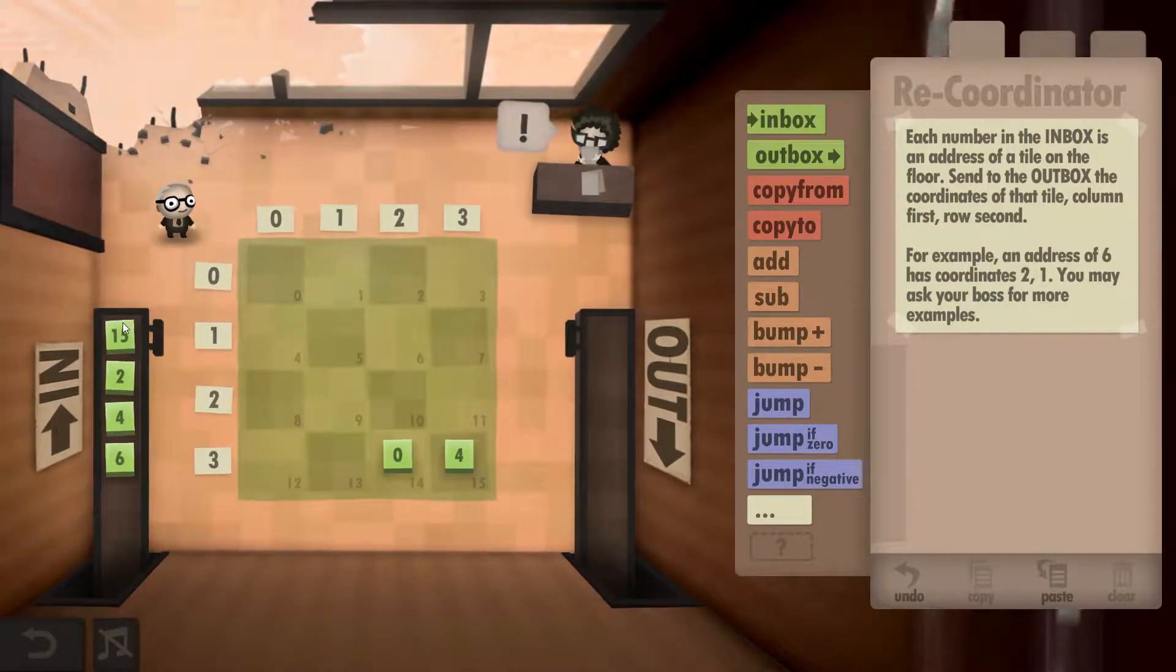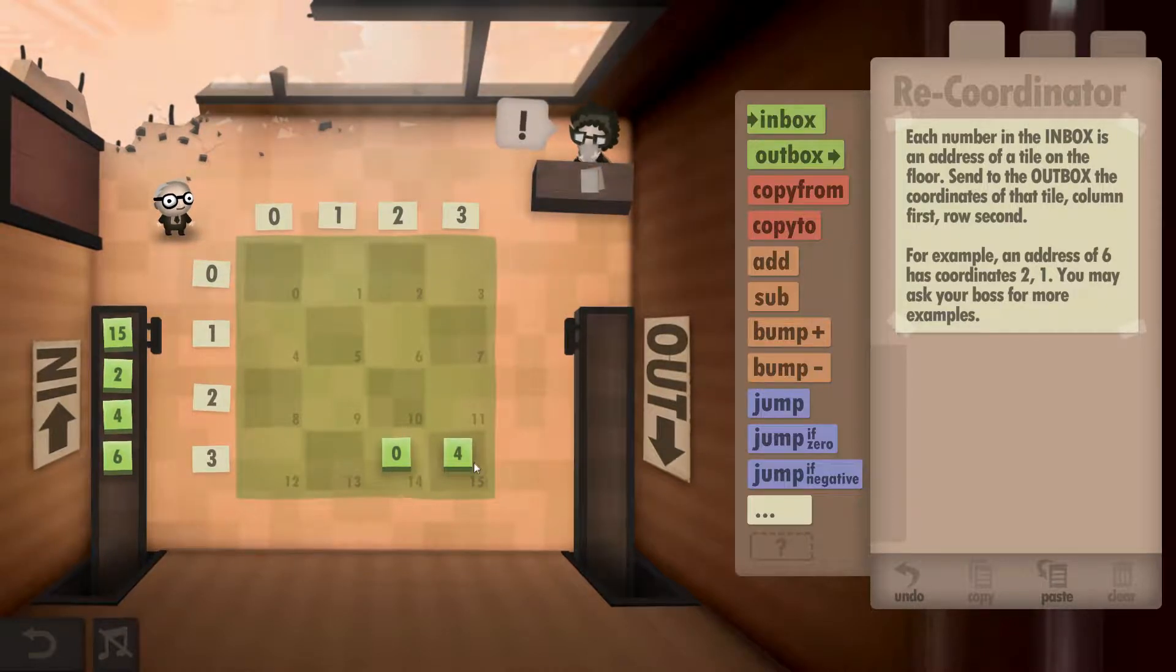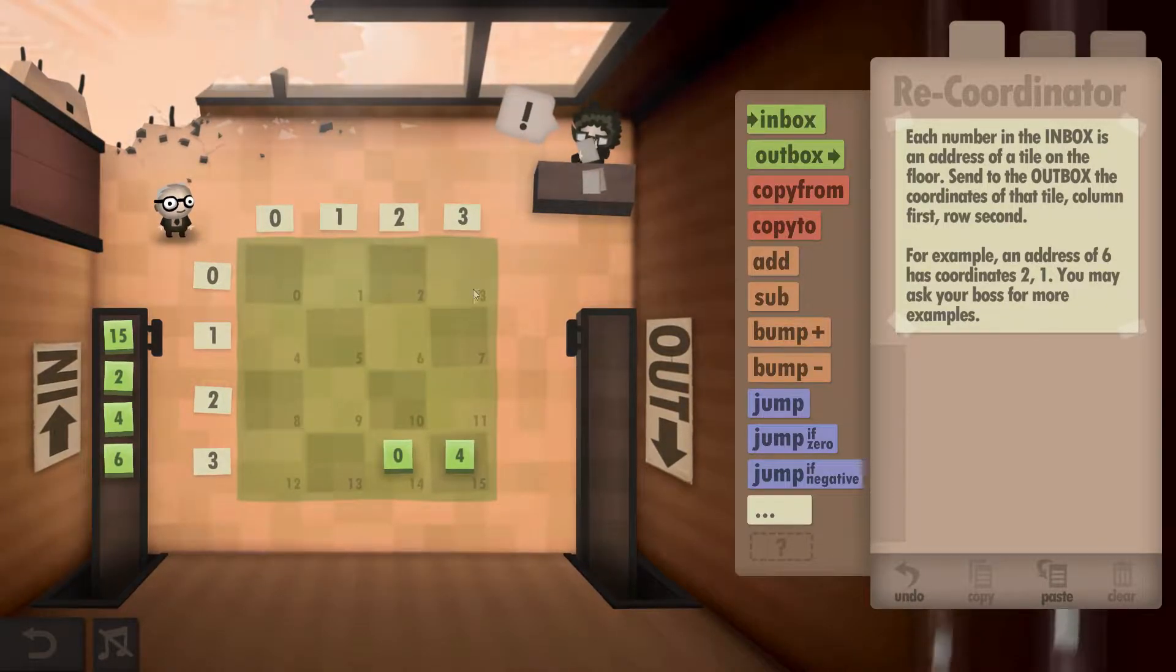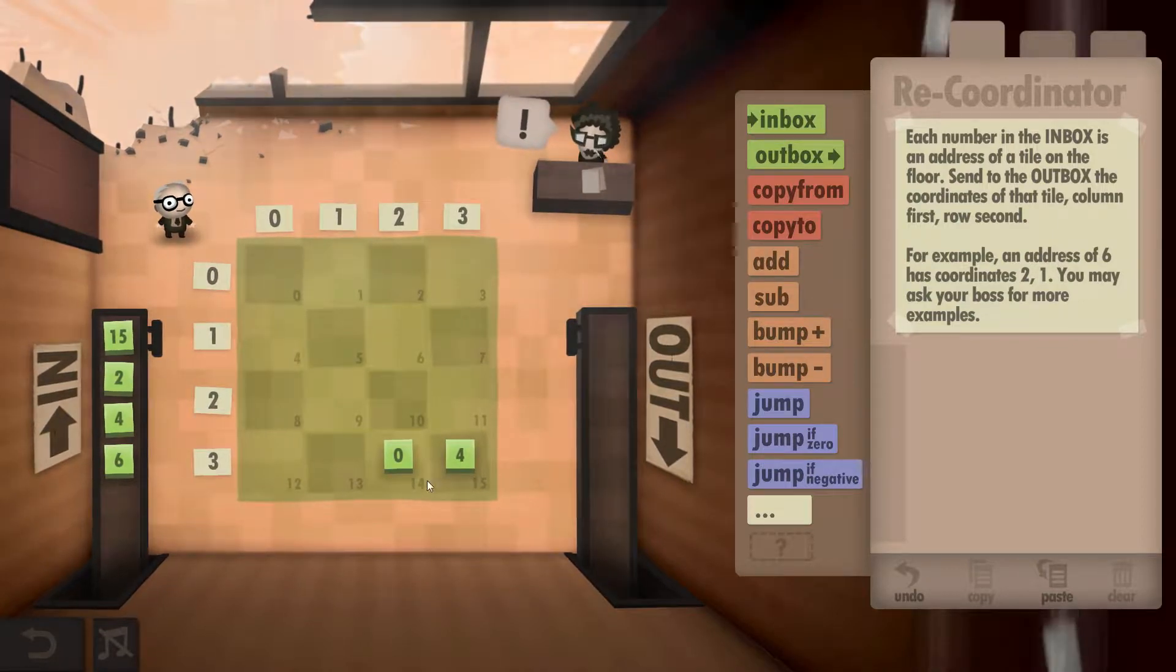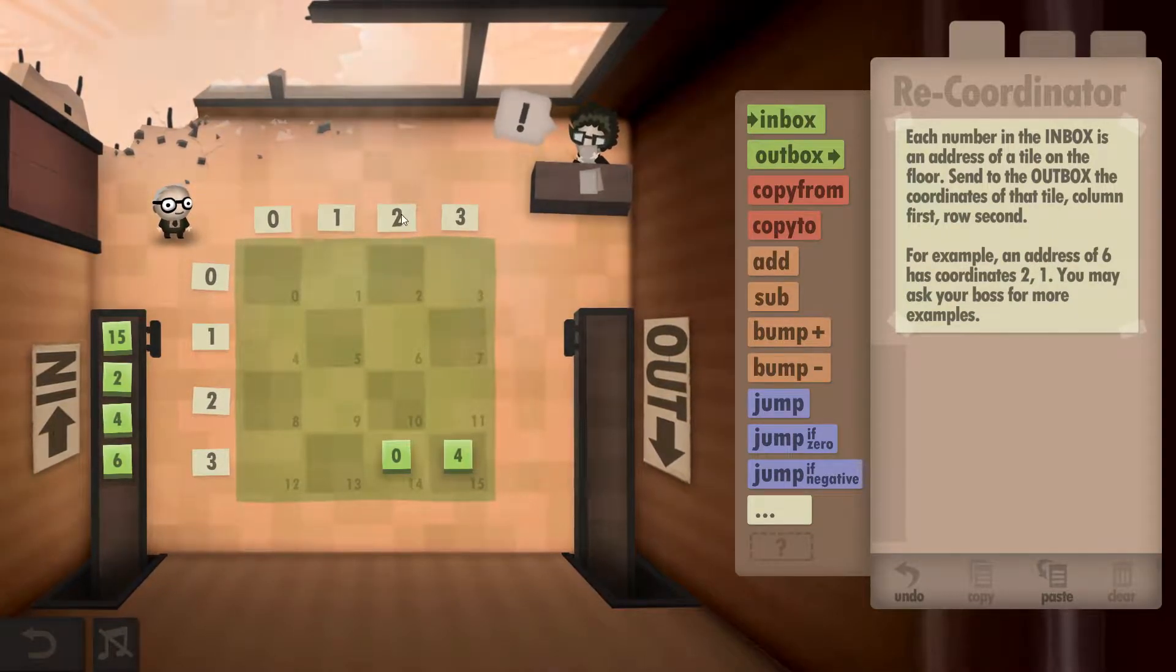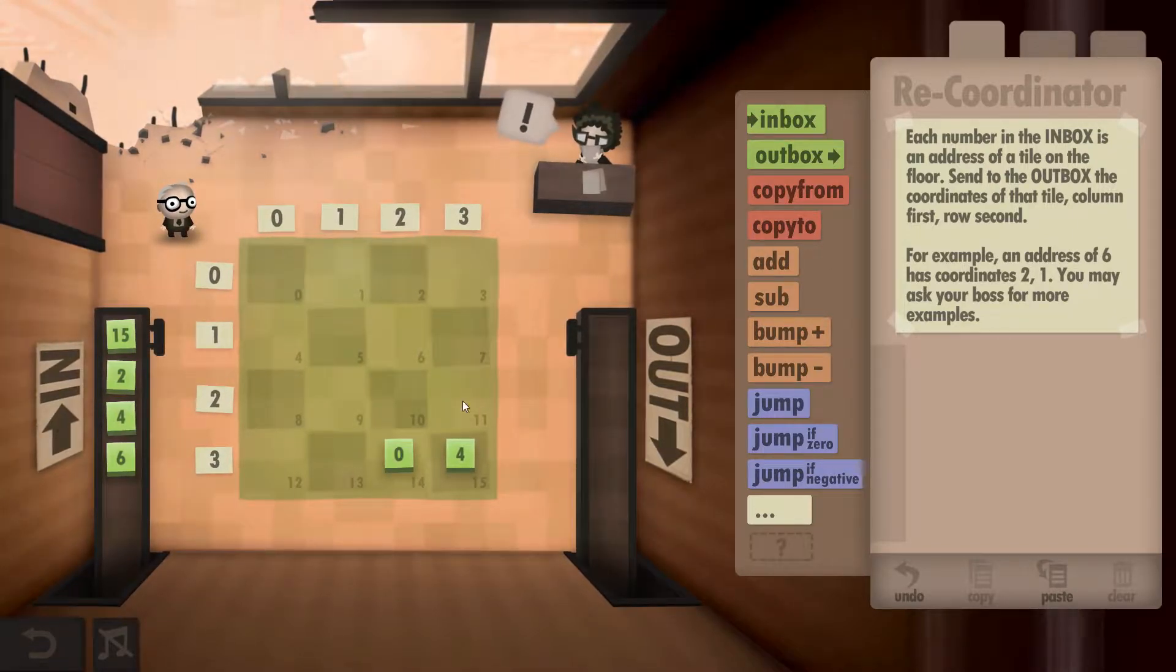What's required is we've got to grab a number from the inbox and output its coordinates. So in this case of 15, 15 is here. We've got to grab the three from the column and the three from the row, so it'll be three and a three. A two would just be a two and a zero, and so forth.